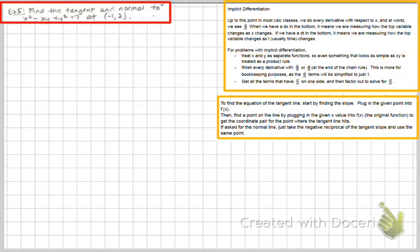Okay, so we're asked to find the tangent of the equation of the tangent line and the equation of the normal line at this particular point. Since they give us the point x equals negative 1, y equals 2, all we really need to do is go ahead and find the slope.